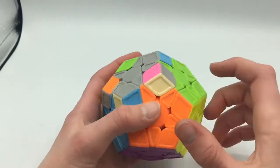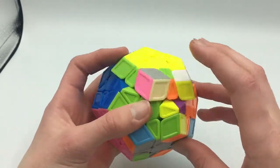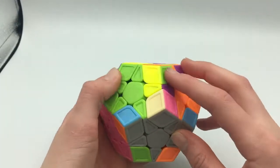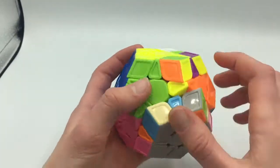You get to orient the corners by holding it up here and doing this algorithm. Repeat, and then there you go. Now move the bottom layer until you get it, now do that again.